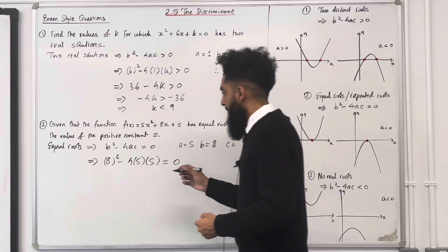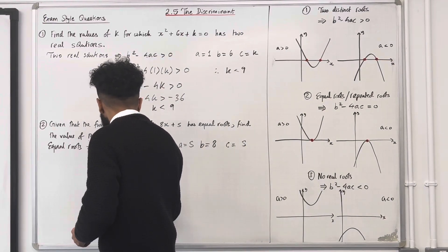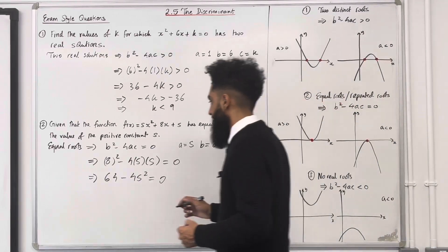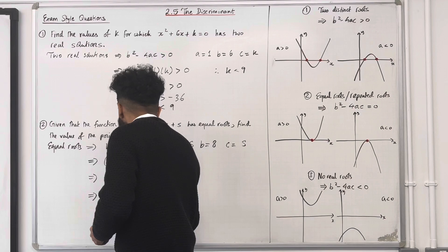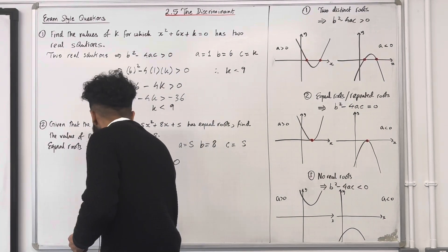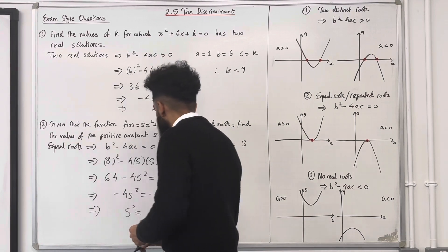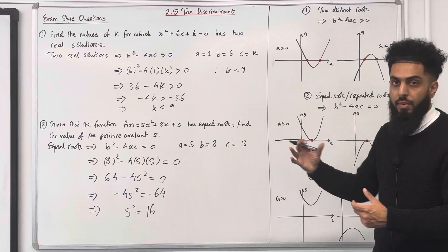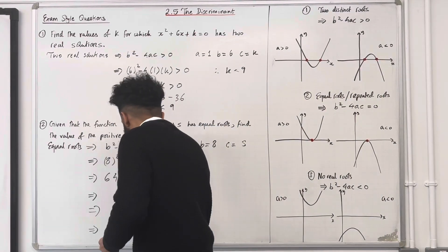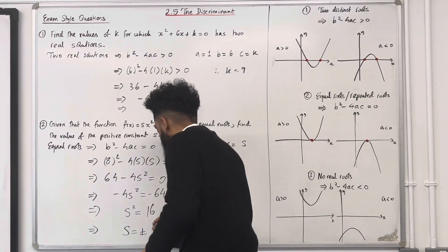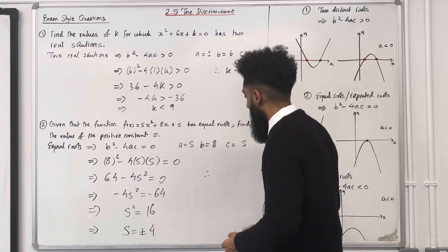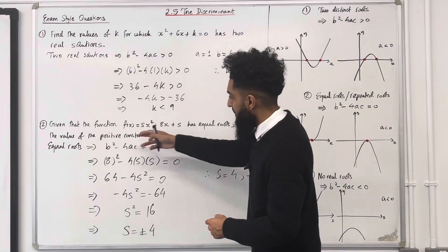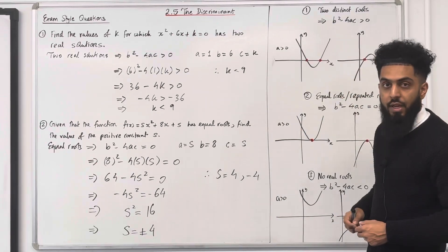Simplifying gives 64 minus 4s squared equals 0. Rearranging: minus 4s squared equals minus 64, so s squared equals 16. Taking the square root — including plus or minus — gives s equals plus or minus 4. Therefore s equals 4 or minus 4. For these two values of s, the quadratic function will have equal roots. That solves question 2.